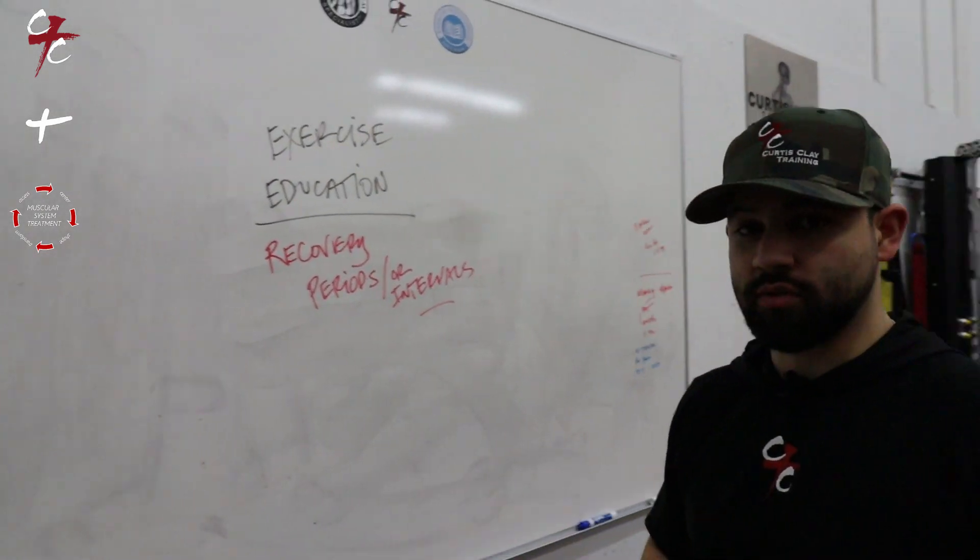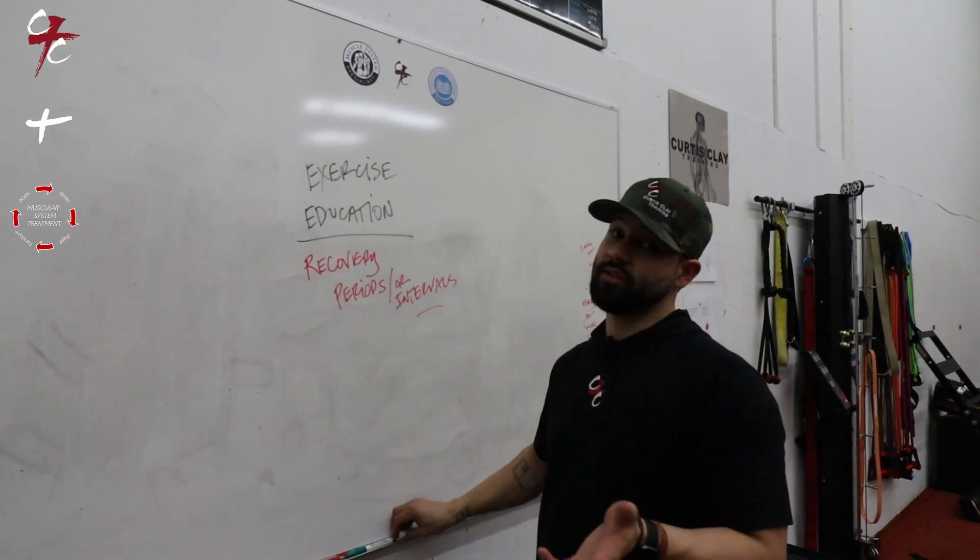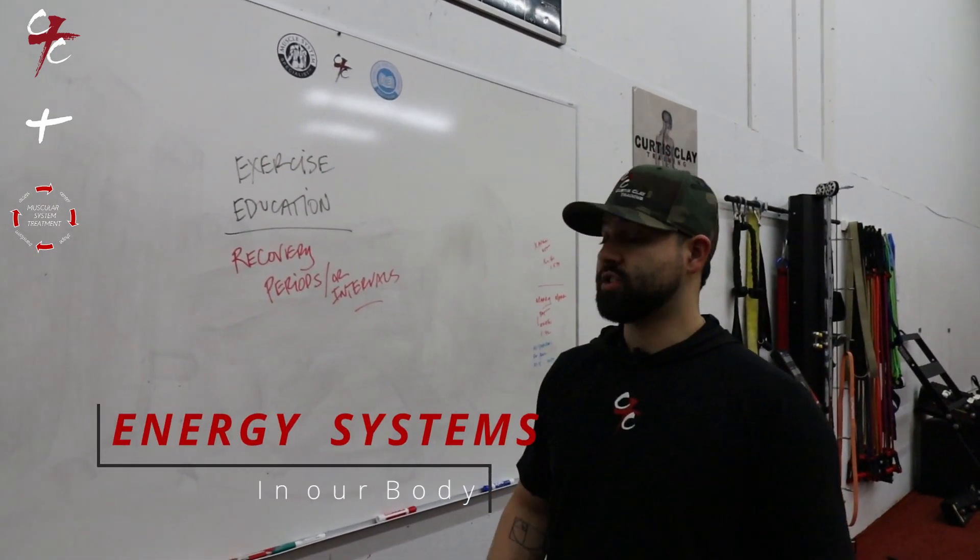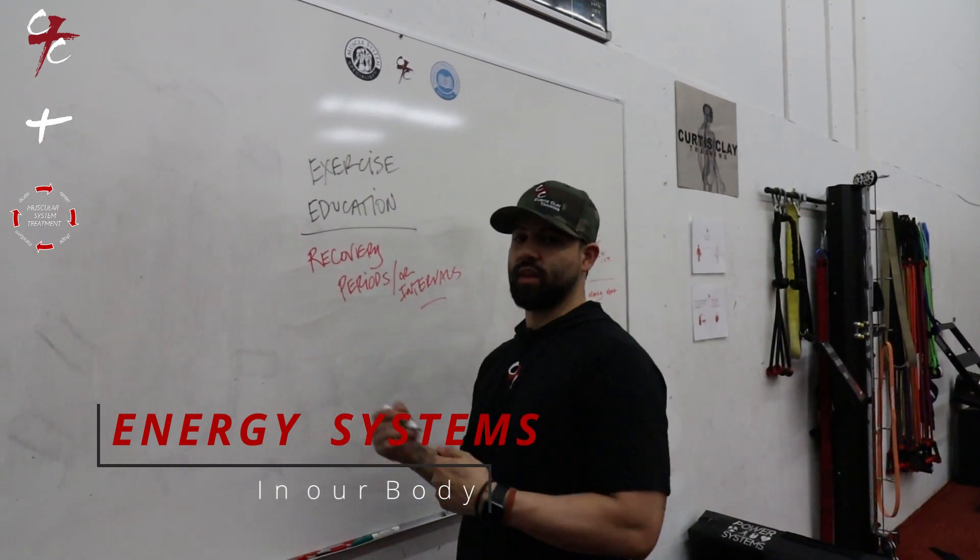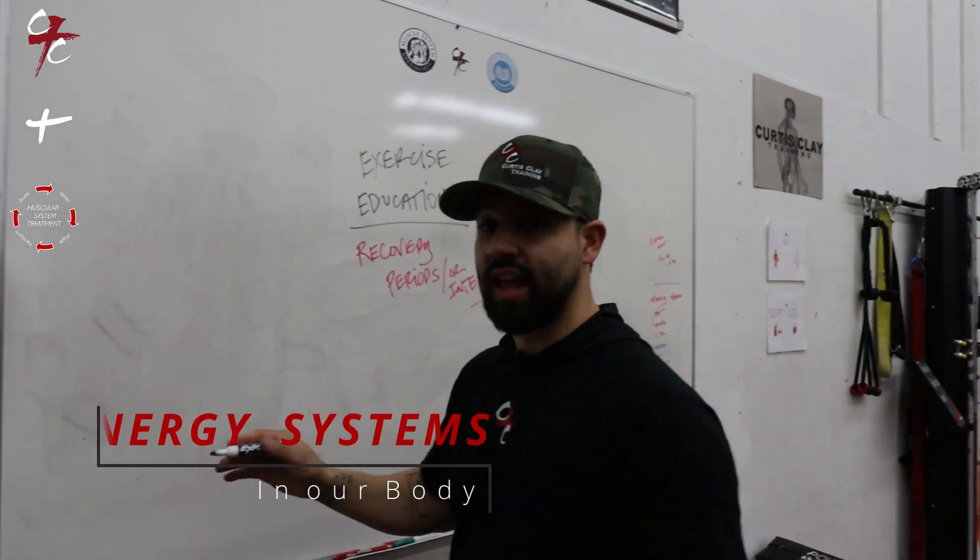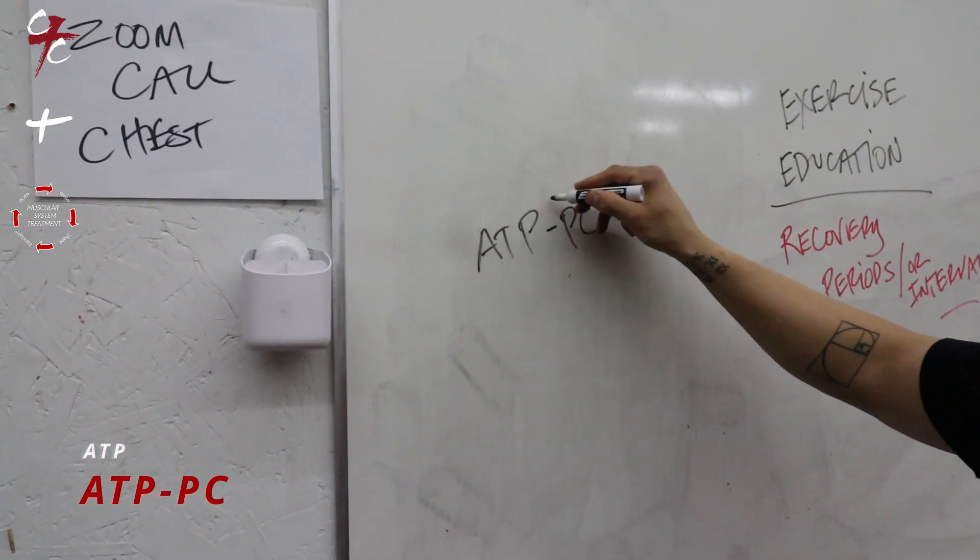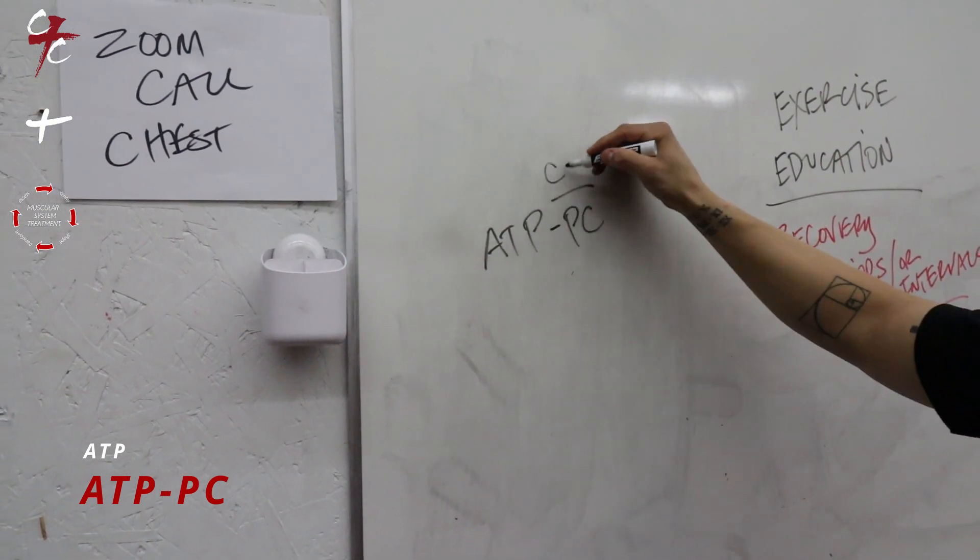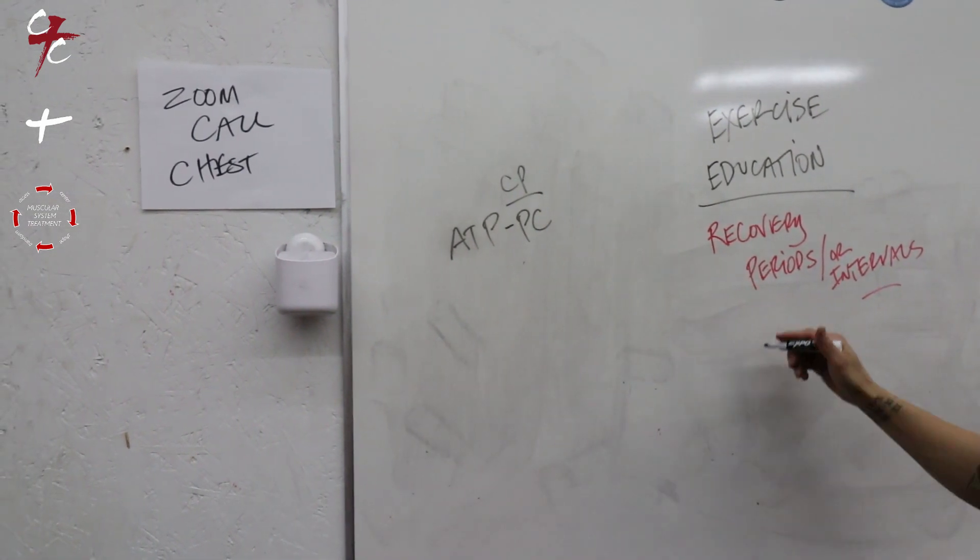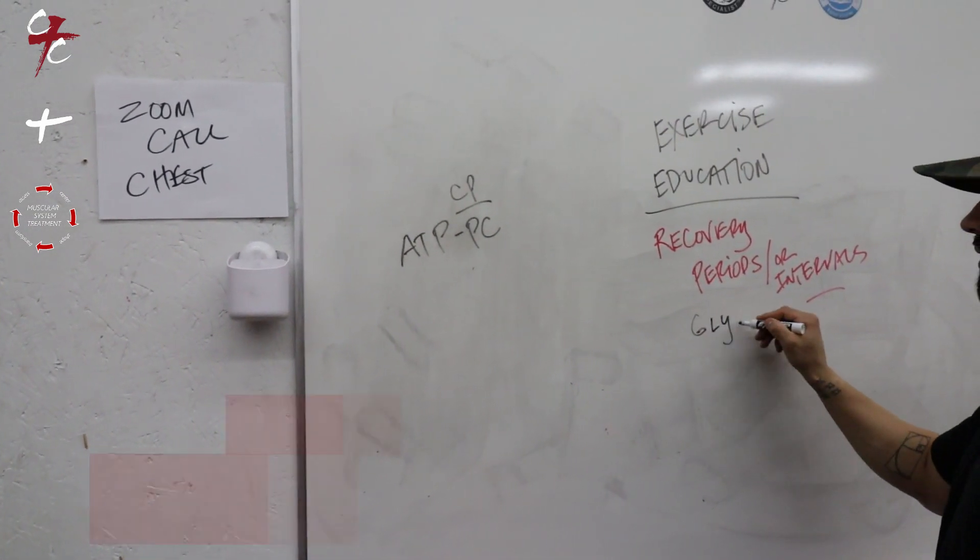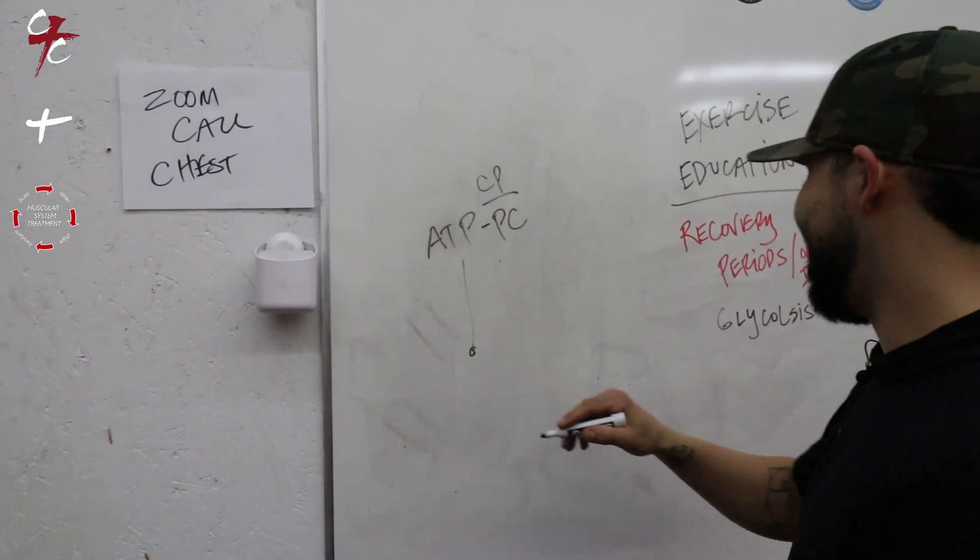So recovery periods or intervals, what does that mean? To break this down, I've got to talk about energy systems. We have three different energy systems within our body. We have ATP-PC, or depending on the academia you learn from, some call it CP. Then we have glycolysis, and then we have Krebs cycle.